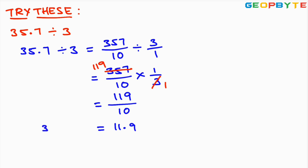We place the decimal point and get 11.9. The result of 35.7 divided by 3 is 11.9.